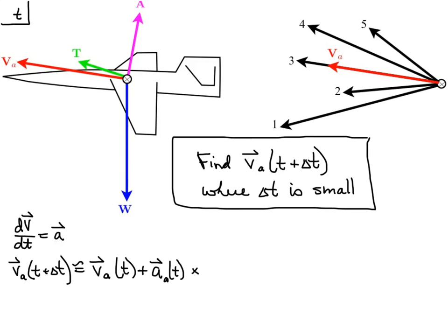So the velocity at time t plus some small delta t is approximately the current velocity plus dv/dt, which is the acceleration, times delta t.